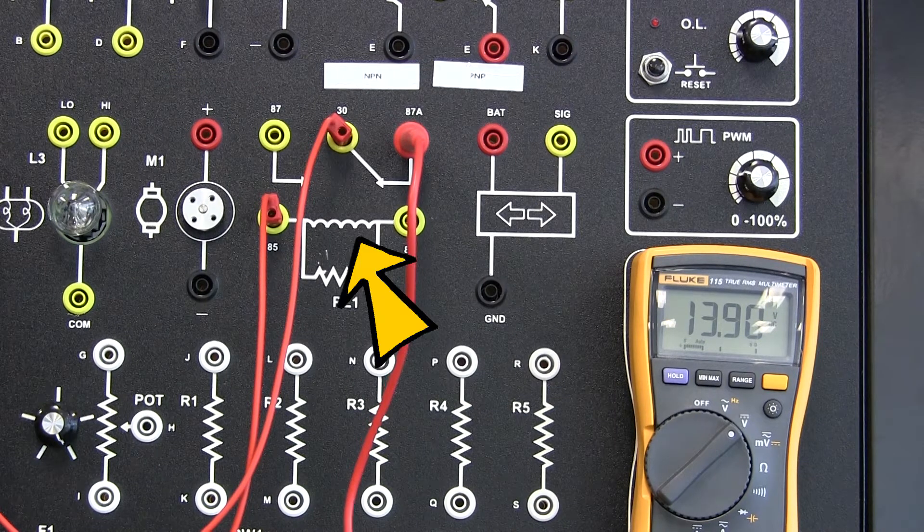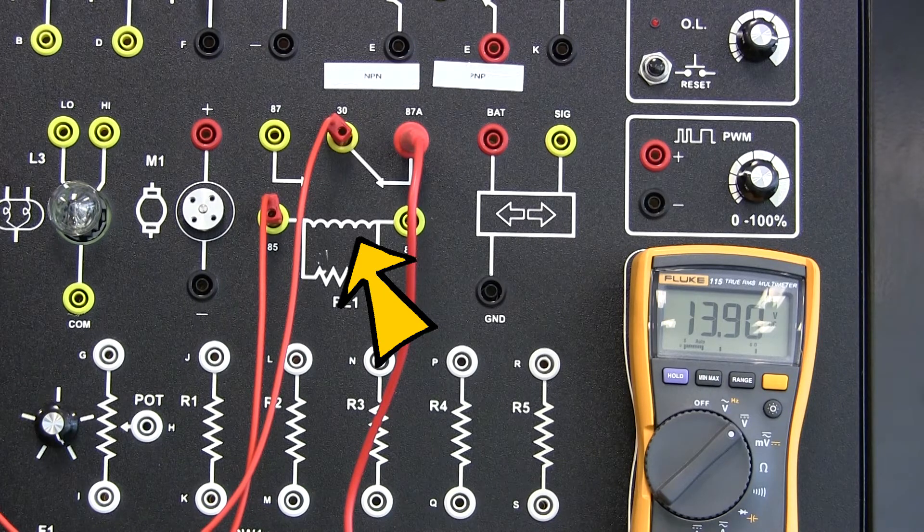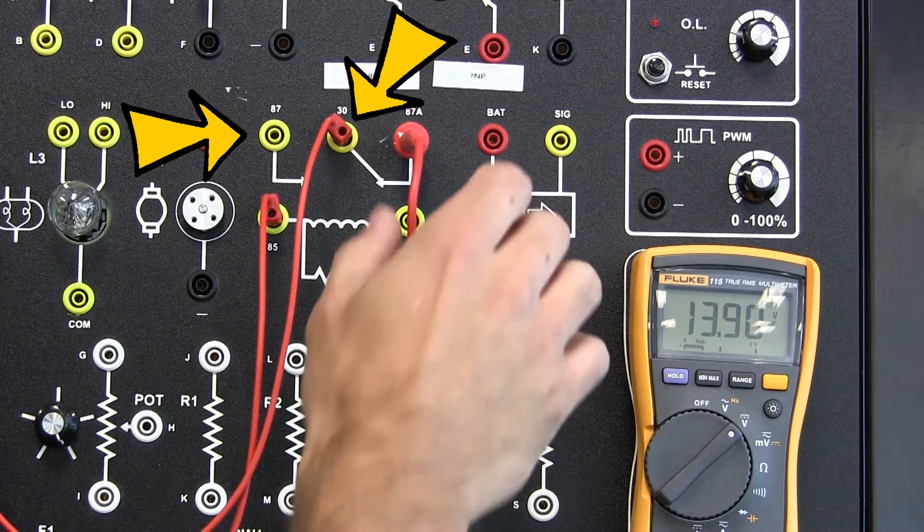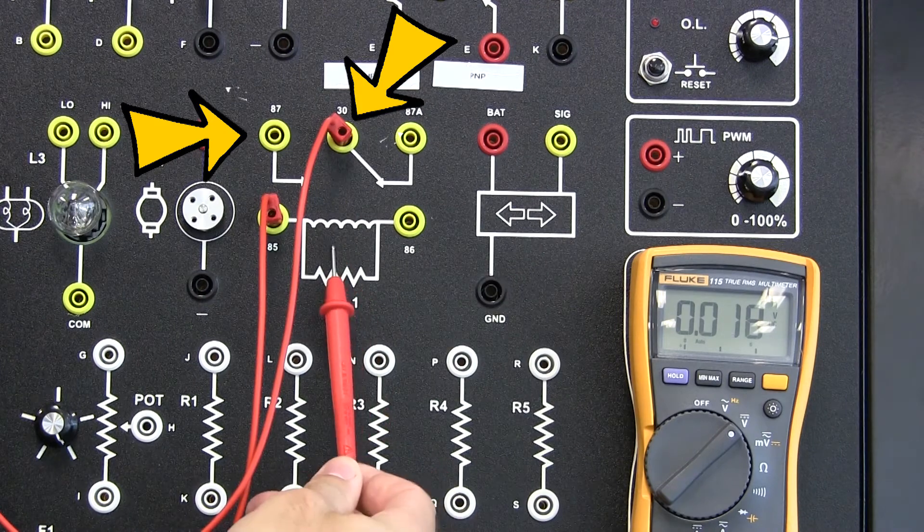The relay is an electromagnet to close the switch between 30 and 87. For that, you need power to a winding.